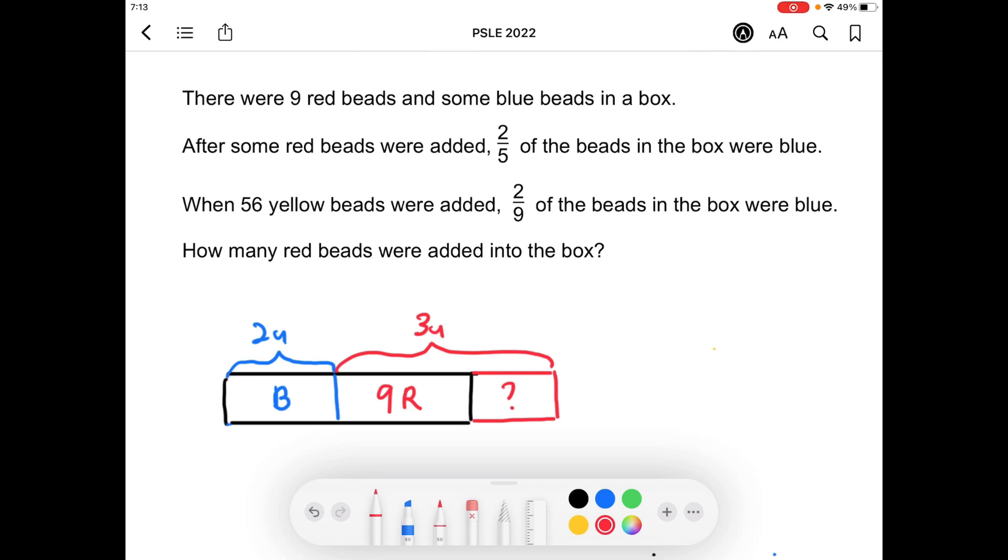When 56 yellow bits were added, I'm just going to add in 56 yellow bits first. So here are the 56 yellow bits. When 56 yellow bits were added, 2/9 of the bits in the box were blue, which means to say that the blue bits still remain as 2 units. So we have 2 units here, and since there's a total of 9 units for all the bits...